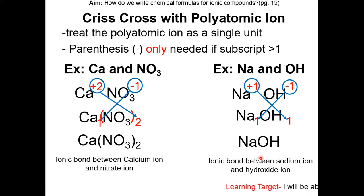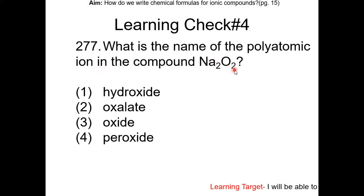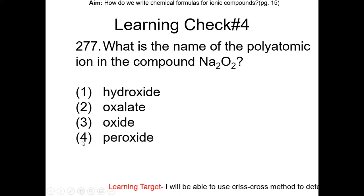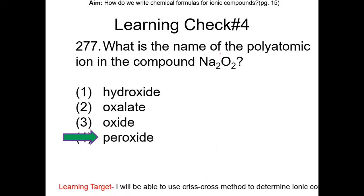Learning check number 4: what is the name of the polyatomic ion in the compound Na2O2? You have to look at table E — don't guess. The answer is peroxide. Peroxide is O2, so this is the peroxide ion.